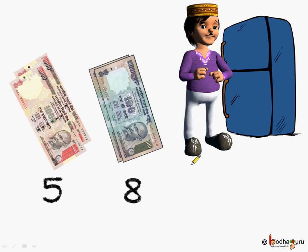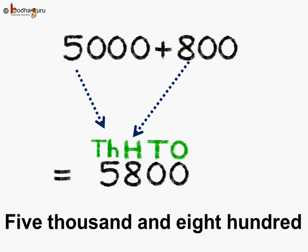Next, you know Rahim got a refrigerator to store his vegetables. How much did he pay? He paid 5 notes of 1000 and 8 notes of 100. So he paid 5000 plus 800.